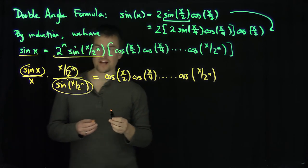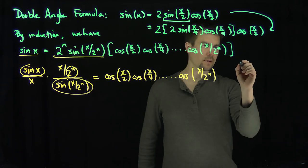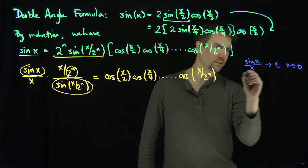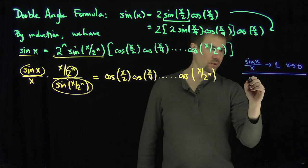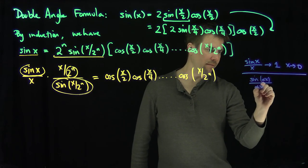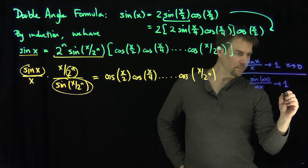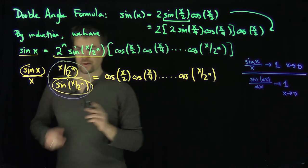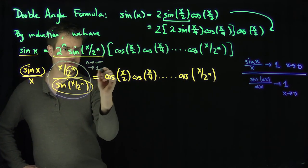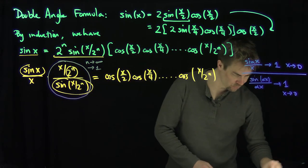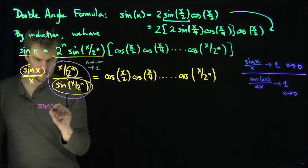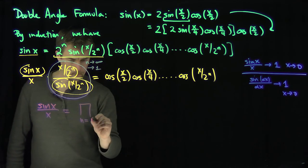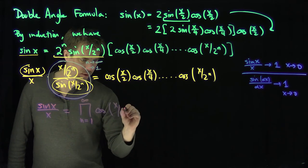Now I'd like to let n go to infinity. Recall that sine of x over x tends to 1 as x approaches 0. Scaling by any constant alpha, sine of alpha x over alpha x also tends to 1 as x goes to 0. So as n goes to infinity, the expression x over 2 to the power of n divided by sine of x over 2 to the power of n converges to 1. Therefore we've proven that sine of x over x equals the infinite product: the product from n equals 1 to infinity of cosine of x over 2 to the power of n.